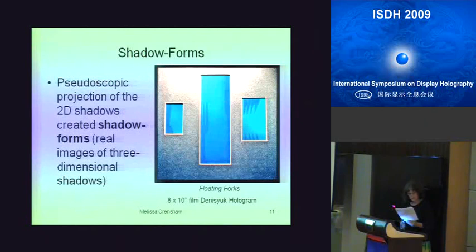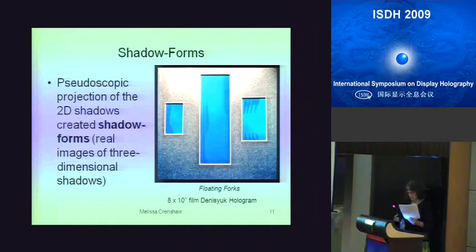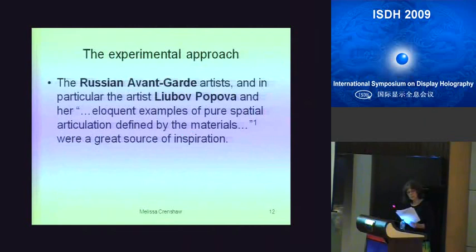Pseudoscopy and the movement inherent with real images had already captivated my attention and defined a new way of thinking about the spatial domain. The pseudoscopic view of the 2D shadows cast into an image scene created real images of three-dimensional shadows — what I called shadow forms. These fork shapes are just three-dimensional shadows that extend out beyond the edges of the mat board. My art history courses brought me into contact with the early 20th century modern art movement and the Russian avant-garde. In particular, artist Louis Bopopova and her eloquent examples of pure spatial articulation defined by the materials were a great source of inspiration, bringing about my own transition into eliminating the identifiable object altogether.